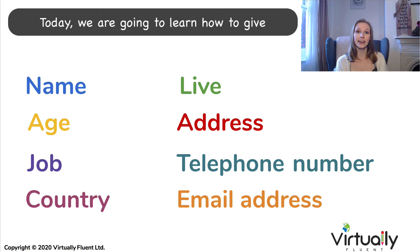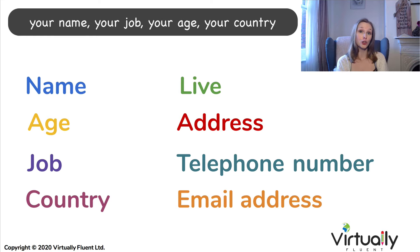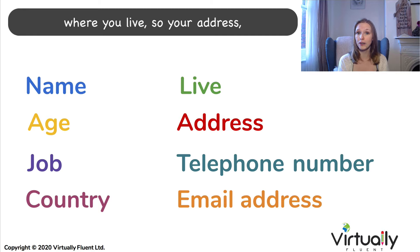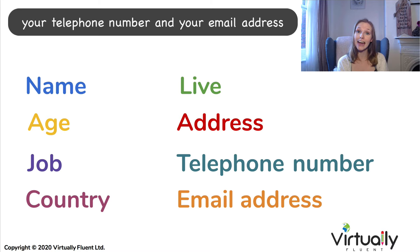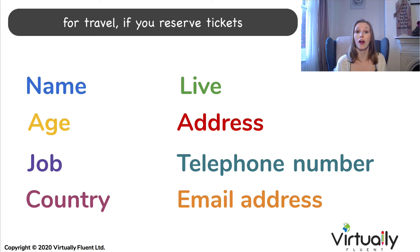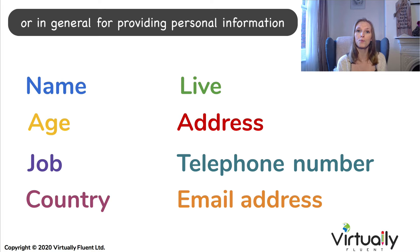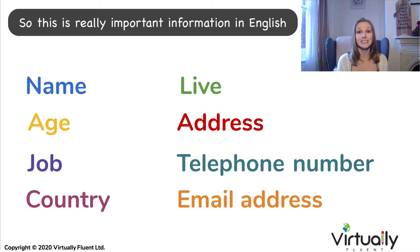Today we are going to learn how to give eight important pieces of personal information: your name, your job, your age, your country, where you live, your address, your telephone number, and your email address. This is important information that you might need for travel if you reserve tickets, for business, if you want to introduce yourself to somebody, or in general for providing personal information. So this is really important information in English.